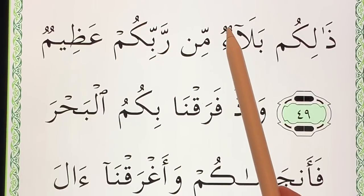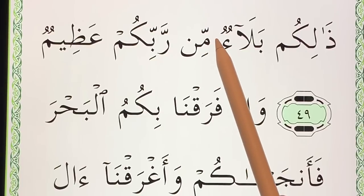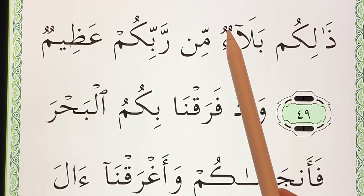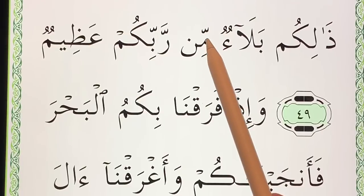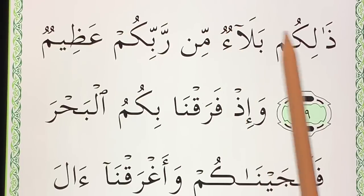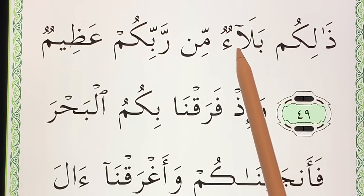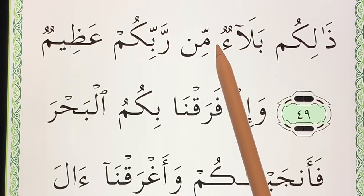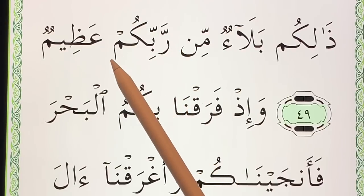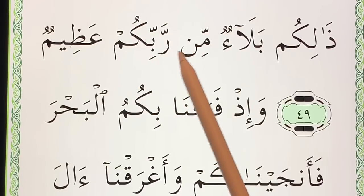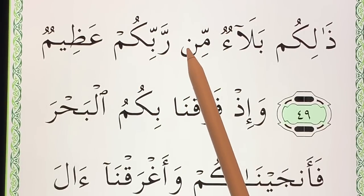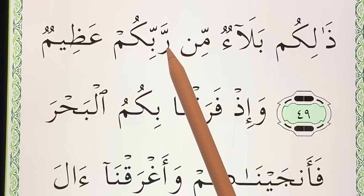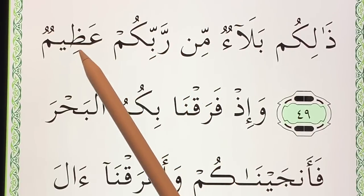And this un becomes a nun mixing with the meem. So you would read it as un with a meem right after, straight into it. بَلَاءٌ مِنْ رَبِّكُمْ — You notice we didn't really read the noon; the noon drops. مِنْ رَبِّكُمْ عَظِيمٌ